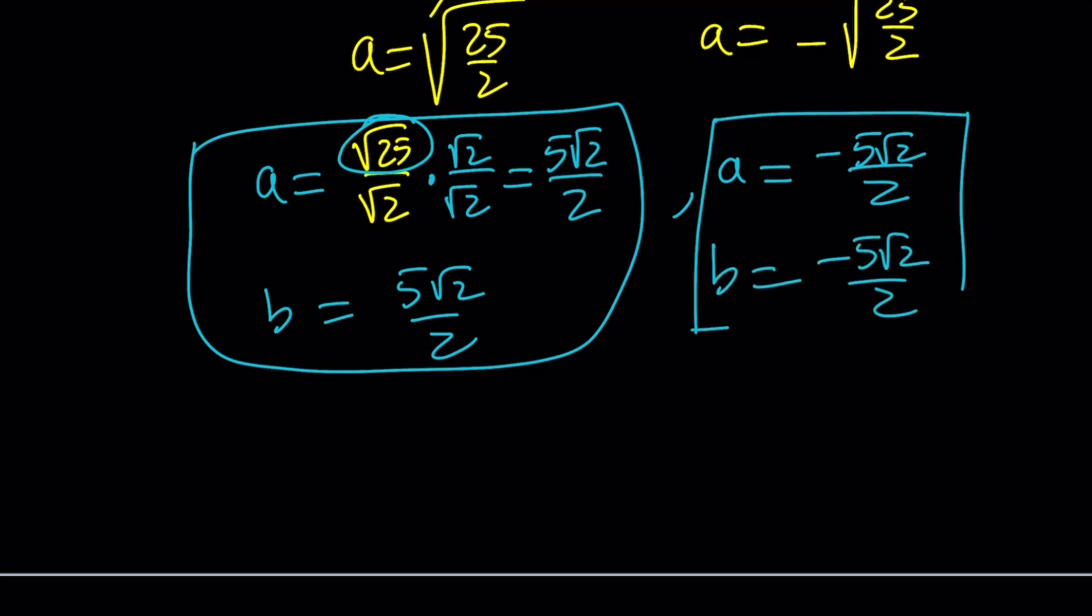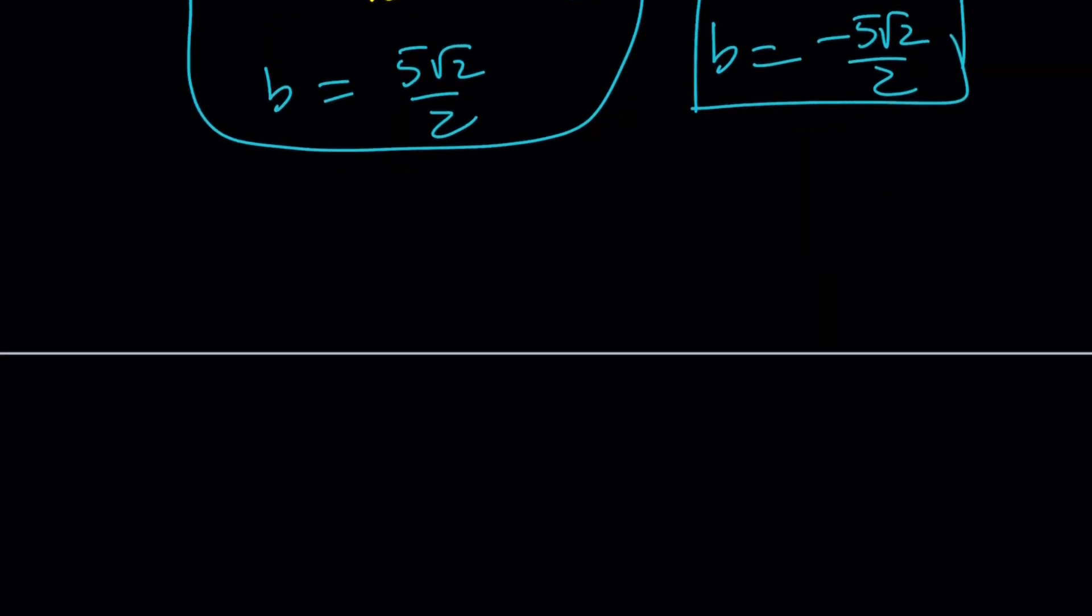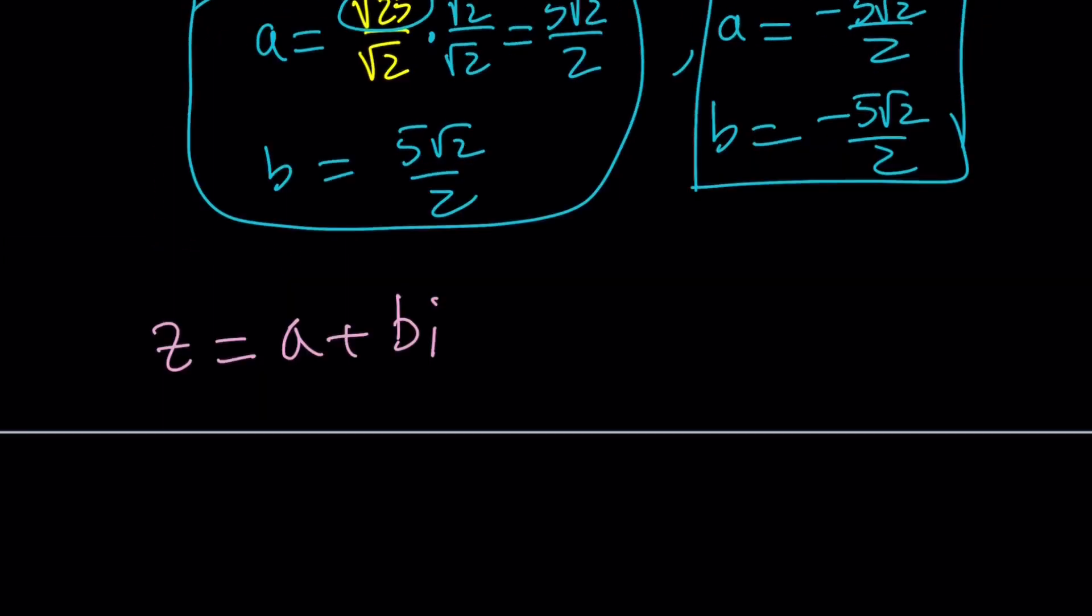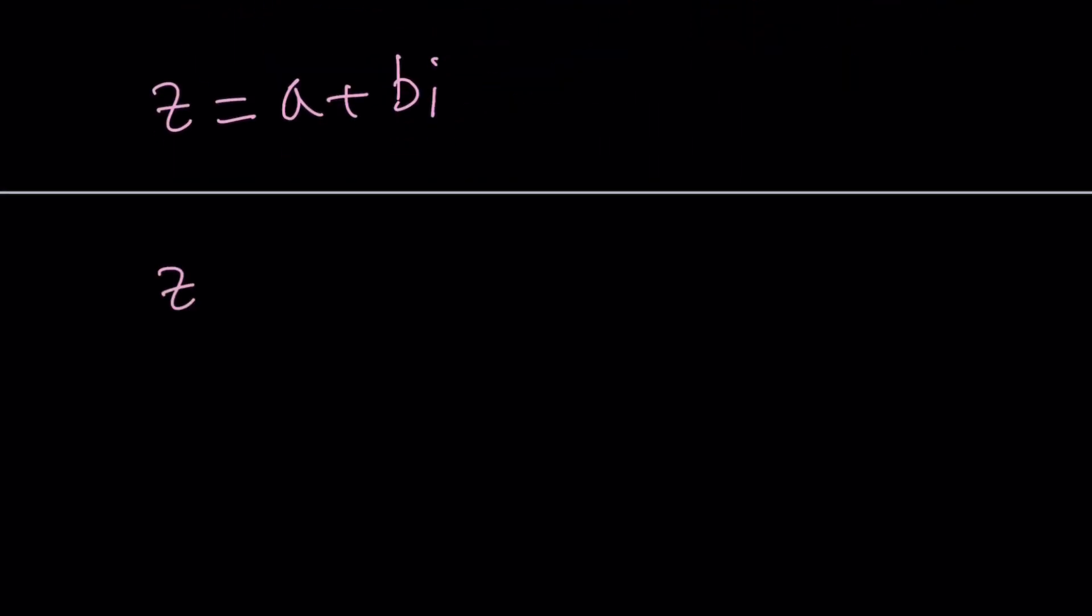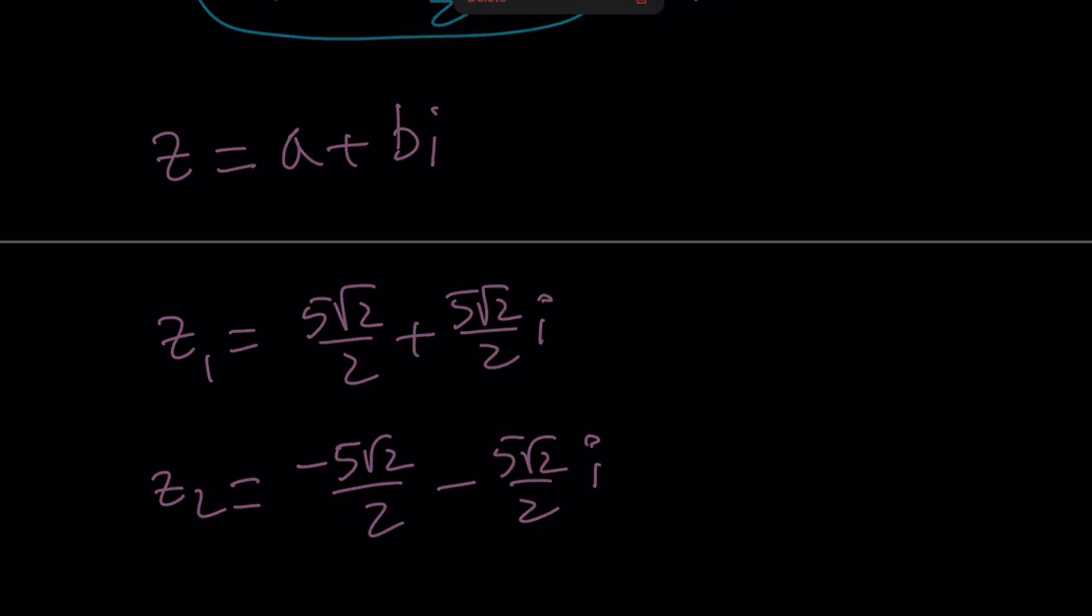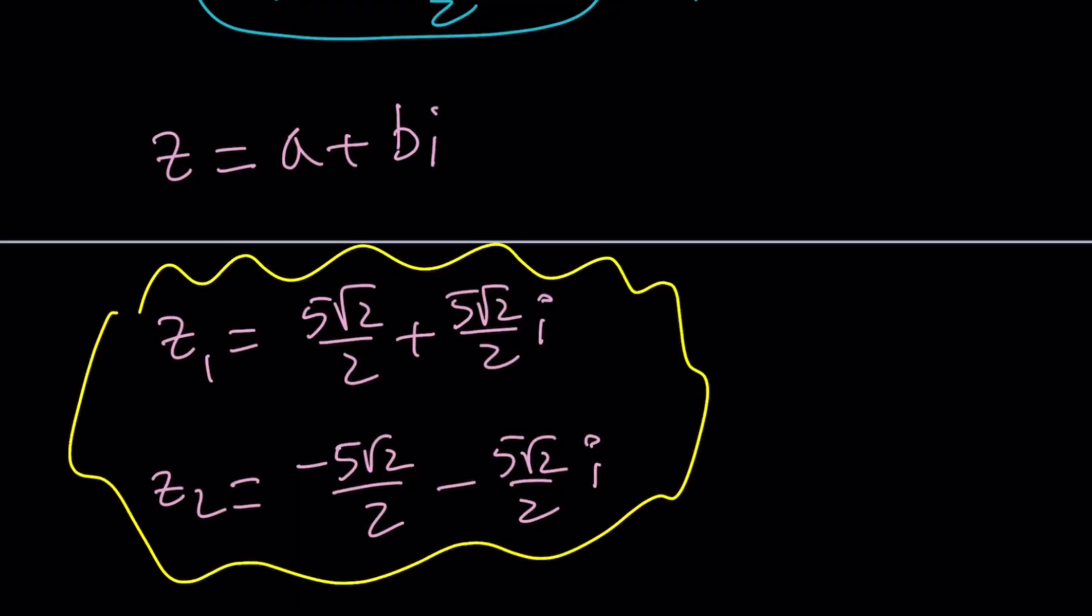This is like a pair, and remember we're supposed to find z, not just a and b. Of course, a and b give us z, so let's put it together. Remember z equals a plus bi as a complex number. Since a and b are given with those values, z sub 1 is 5 root 2 over 2 plus 5 root 2 over 2i, and z sub 2 is negative 5 root 2 over 2 minus 5 root 2 over 2i. There are two solutions that satisfy this equation, and these are the values.